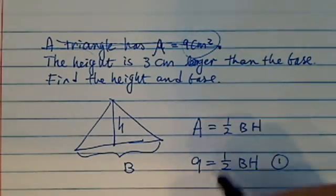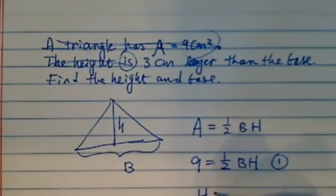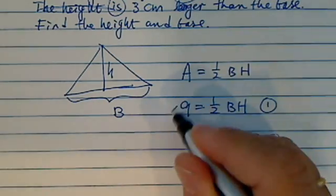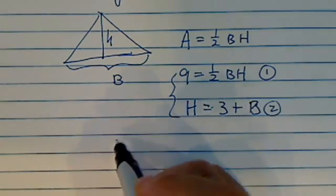The second equation says height literally is equal to 3 longer than the base. So height is equal to 3 plus base. So here's the second equation. So far you have two equations, two unknowns, so let's solve this one.